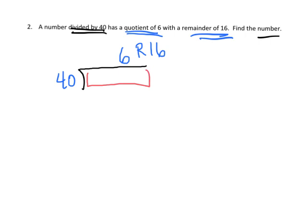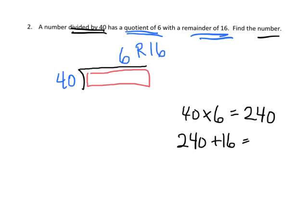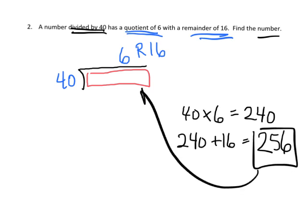It says find the number, find our dividend, that number inside the house. Well we know that we can do that by taking our 40, because that's what we divided by, multiply by 6, that gives us 240. And then take our 240 and add in our remainder 16, and we get 256. And so that tells us this number is what should be right here inside that division symbol, 256.